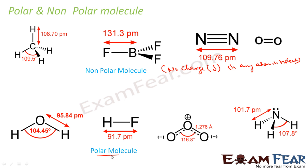In polar molecules, individual atoms may have some charge due to differences in electronegativity and lack of symmetry. For example, in H₂O, oxygen gets a slight negative charge and hydrogen gets a slight positive charge. In HF, fluorine attracts electrons toward itself, giving it a slight negative charge and hydrogen a slight positive charge. O₃ and SO₃ are also slightly polar molecules with dipoles.